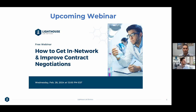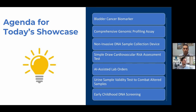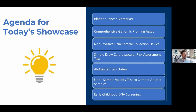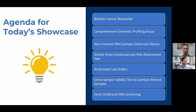That upcoming webinar is being handled by our payer strategy solutions team — a team that used to work on the other side of the table for Blue Cross and some commercial payers, spending their career deciding which laboratories are in-network and how to get approval. They're able to guide and leverage their network to get you to the table for in-network status, and most of their fees are based on success. Quick agenda for today: we're starting off with John Cucci from AcuPath, talking about a bladder cancer biomarker.